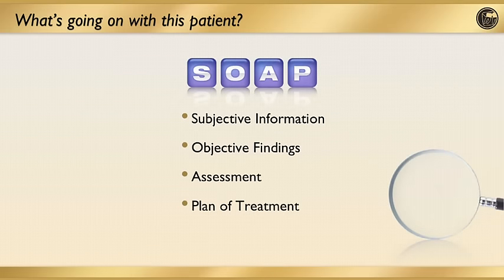The standard diagnostic framework we use today is the SOAP format. The subjective information refers to what the patient tells you — their chief complaint. Our objective findings are what we see as clinicians and the results of our testing. The assessment is when we put that information together to come up with a formulative diagnosis, and our treatment plan follows from that diagnosis. We want to know: do what the patient tells us and what we see match up, and are they backed up by the results?